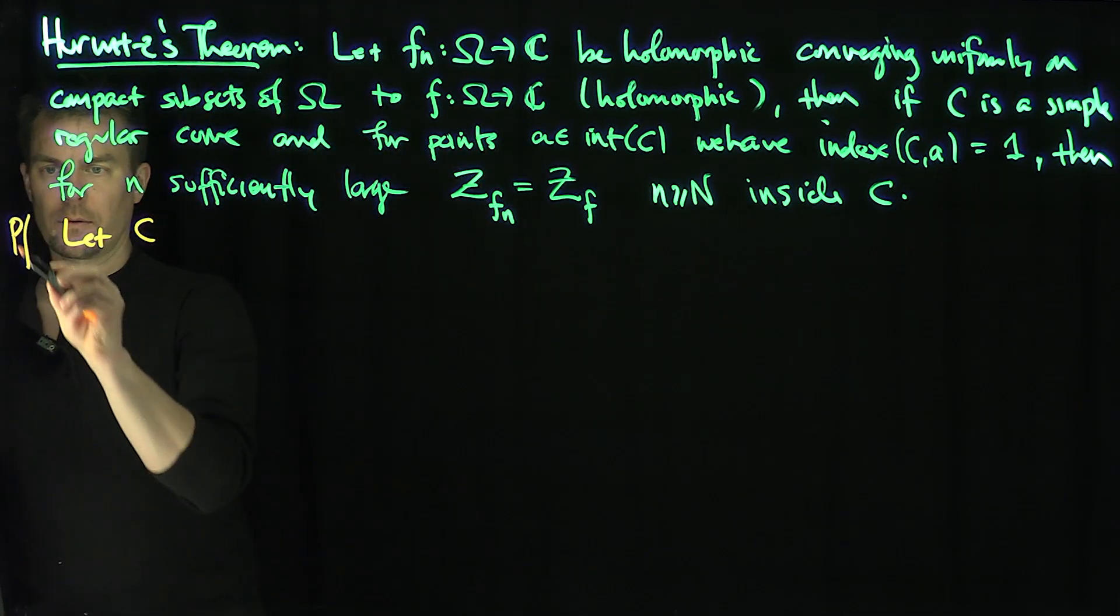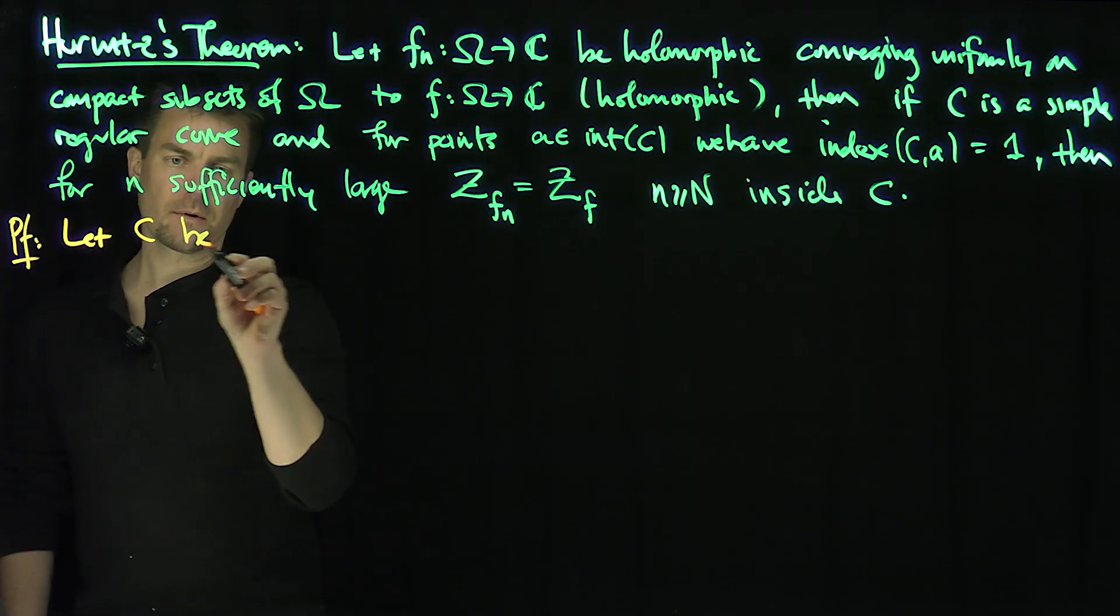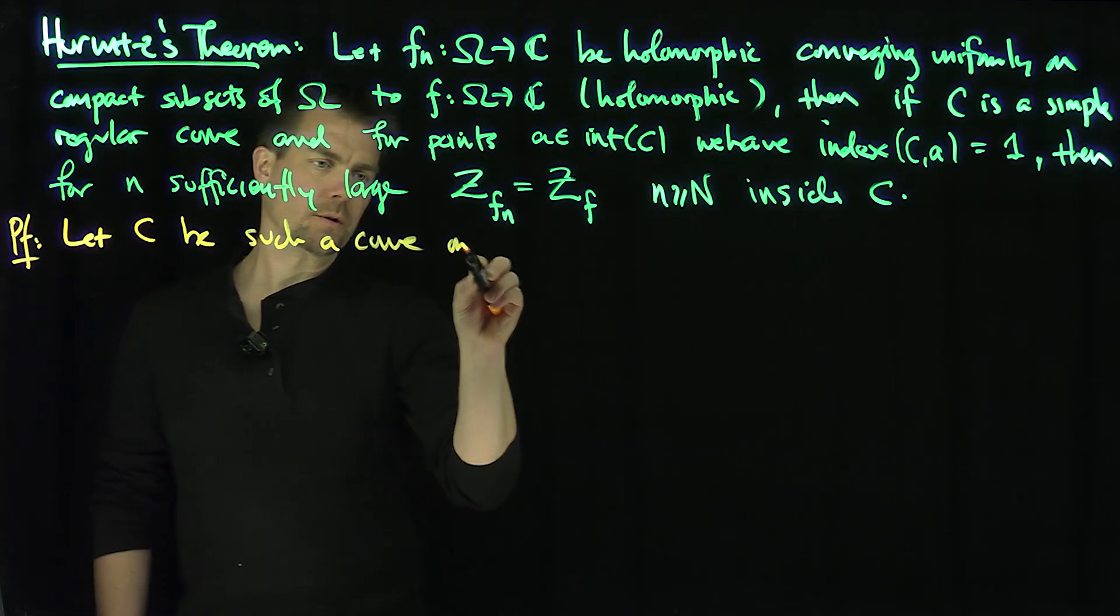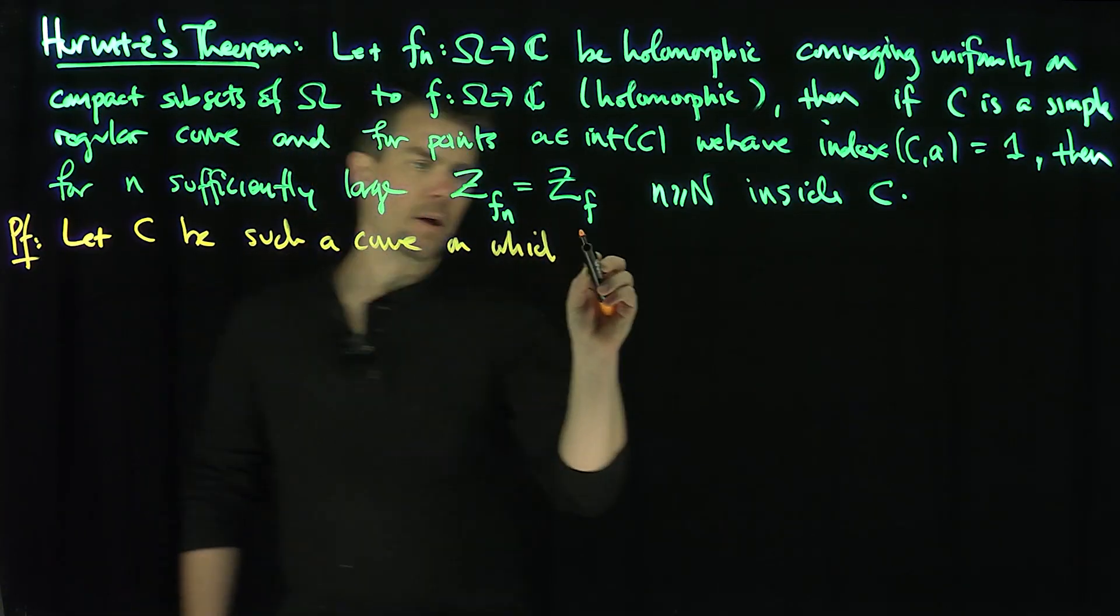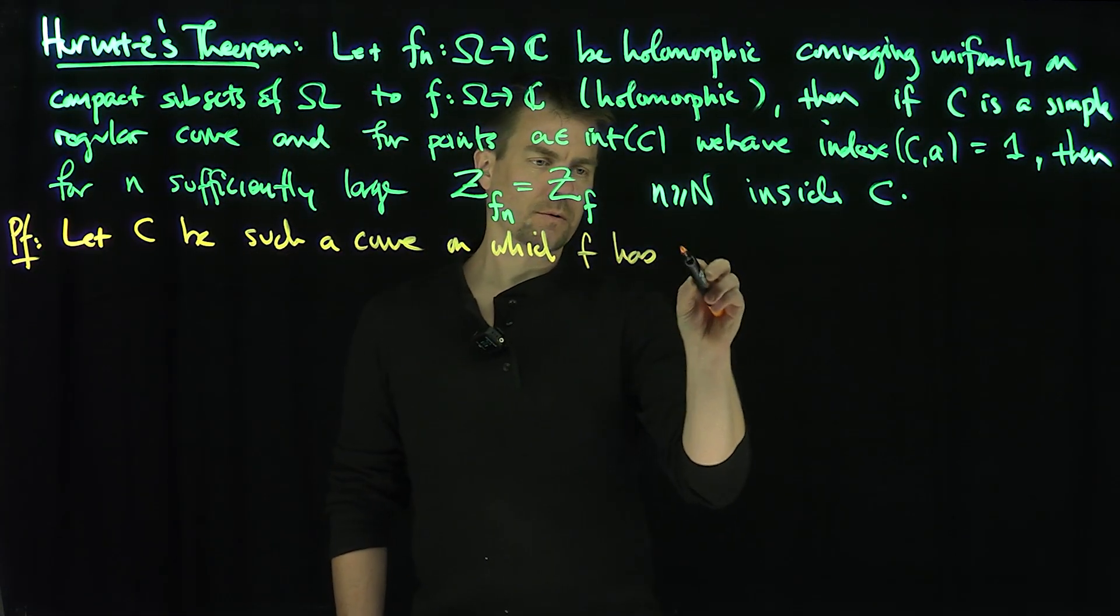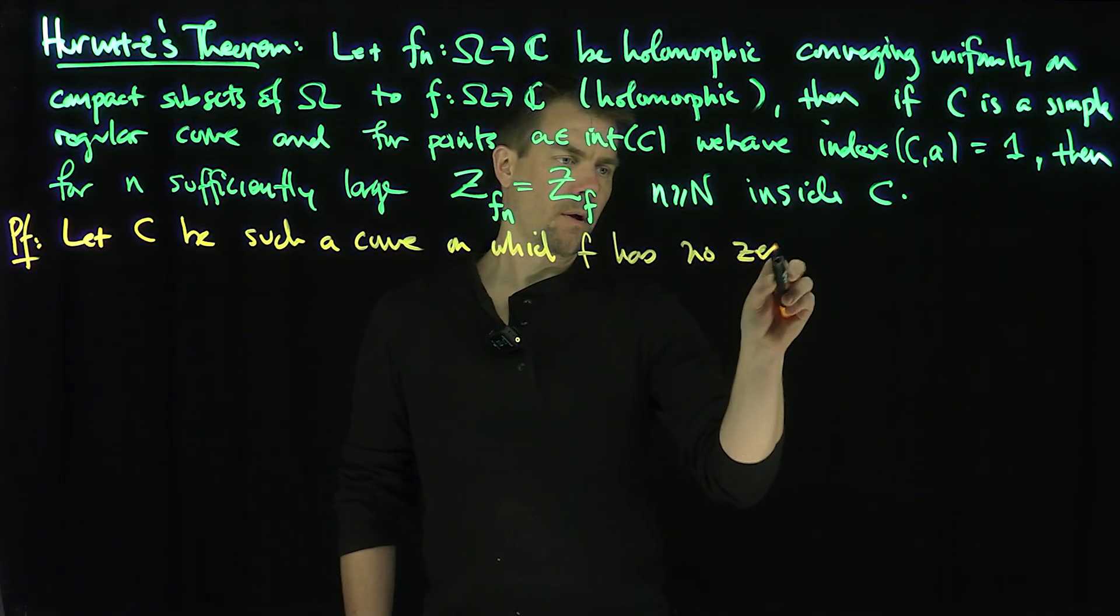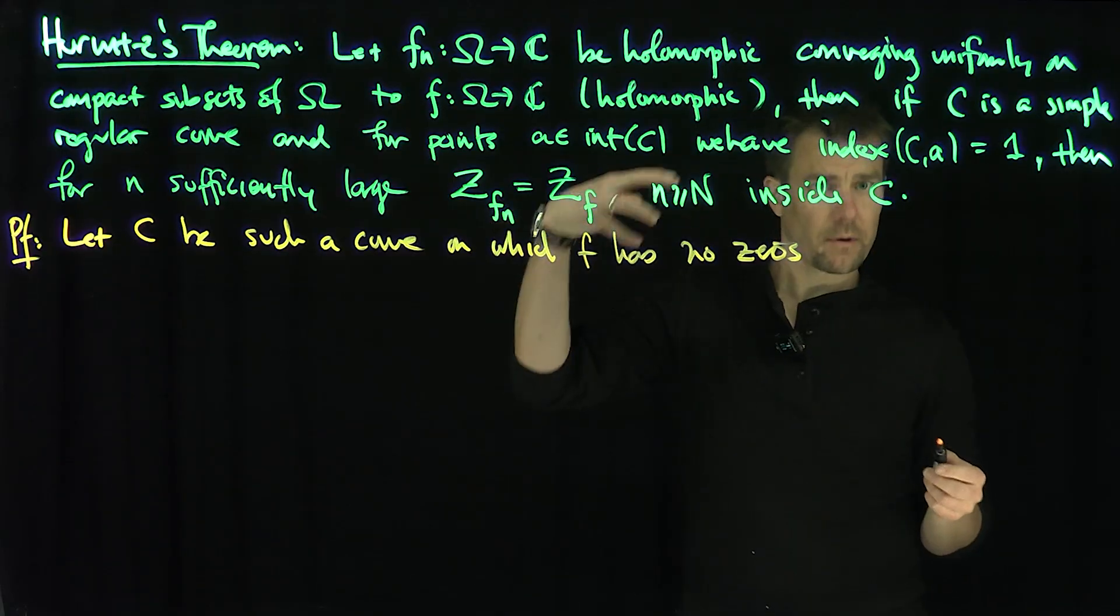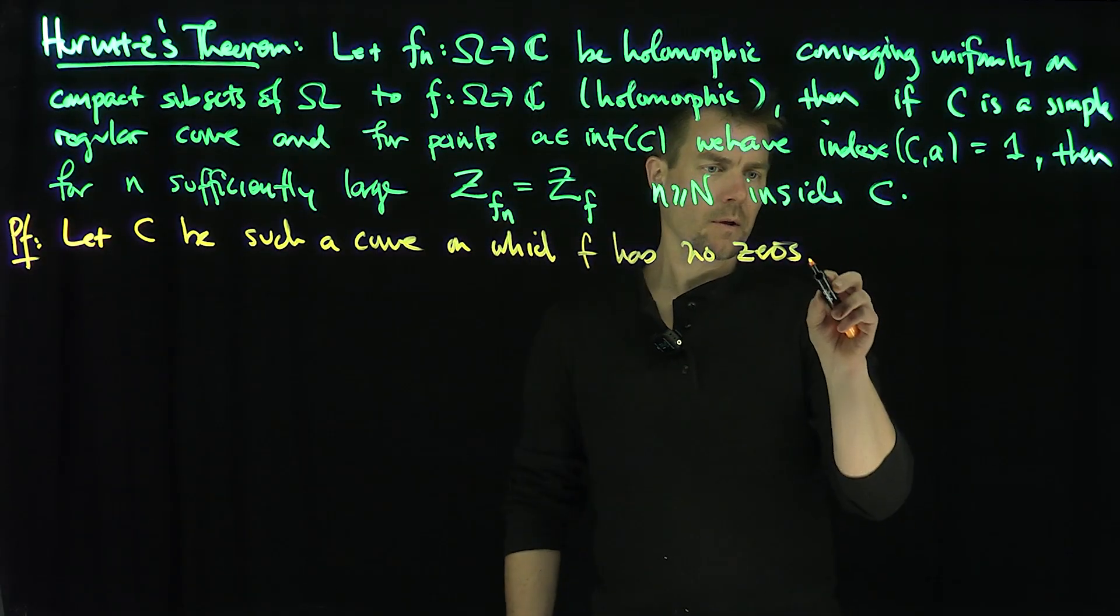be such a curve on which f has no zeros. Then neither will fn for n sufficiently large. Then